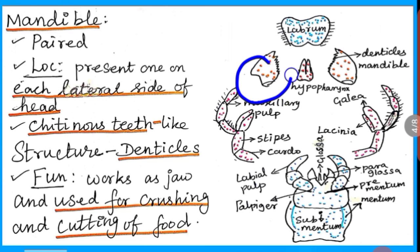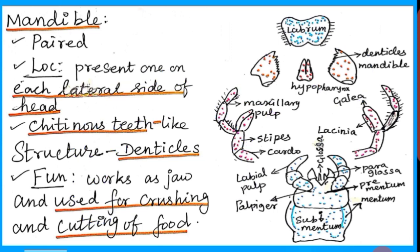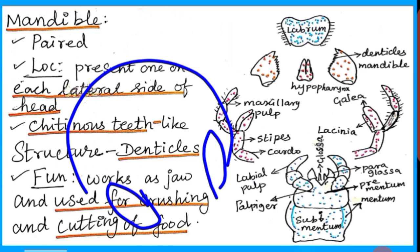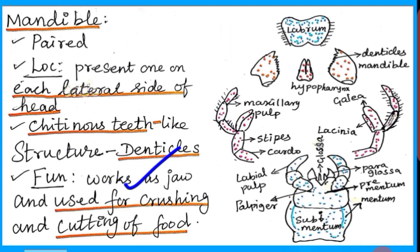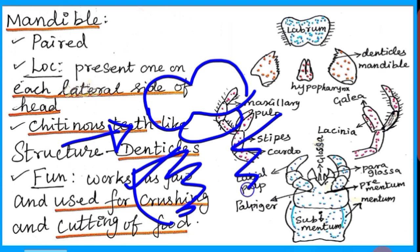Mandible is present on the lateral side of the head, one on each side of the head part. It has chitinous teeth-like structures called denticles. The function of the mandible is that it works as a jaw and is used for crushing and cutting of food. When the cockroach takes its food, the labrum holds the food, and the denticles cut and crush the food in an inward direction.